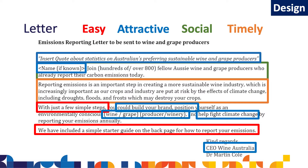Moving on to the design stage: given that there's already awareness of Wine Australia's desire to have growers and producers share their data, the letter is not intended to raise awareness generally but rather to improve the clarity of the messaging. The letter highlights the simplicity of the process and that a significant number of people are already sharing this data. Examining it through the EAST framework — Easy: the letter uses the framing effect to make reporting appear simple, with language such as 'with just a few simple steps' framing the act as non-time consuming. Attractive: addressing the reader by name increases salience, and the letter is signed off by someone such as the CEO of Wine Australia to leverage the messenger effect.